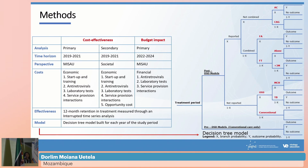The cost-effectiveness analysis period was from 2019 to 2021 and it was conducted from two perspectives. From the Ministry of Health perspective, the economic costs included startup costs, antiretrovirals, laboratory costs, and service provision interactions. For the budget impact analysis, the period was from 2022 to 2024 and the financial costs included antiretrovirals, laboratory tests, and service provision interactions.